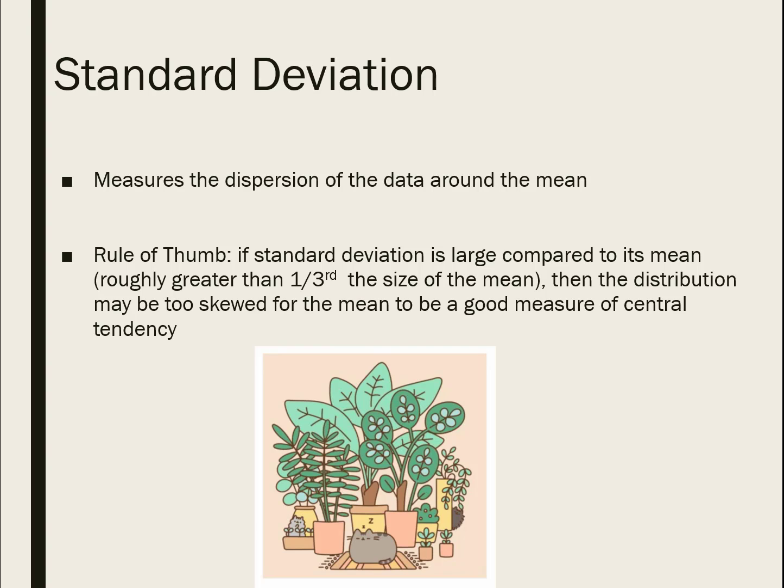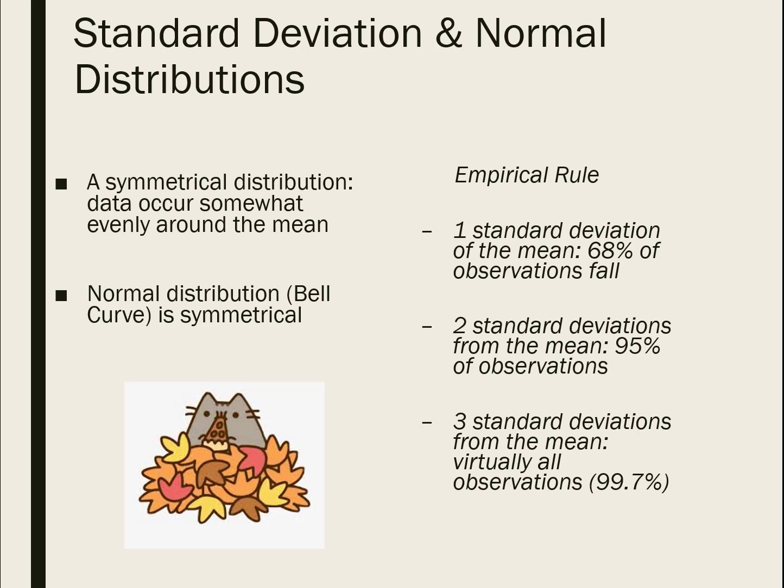The gold standard of dispersion is standard deviation. Standard deviation measures the amount of dispersion, or variability, of the data around the mean. The most common combination to report is the mean and its standard deviation, because if you know the standard deviation, you know about the shape and feel of the distribution. The rule of thumb: if the standard deviation is roughly greater than a third of the size of the mean, the distribution may be too skewed for the mean to be a good measure of where the actual middle is.